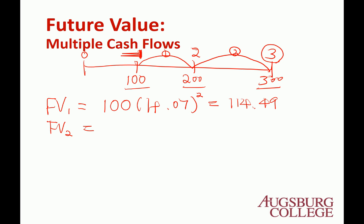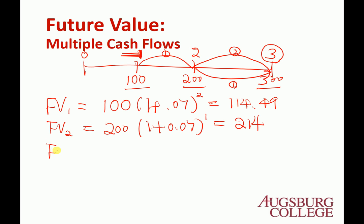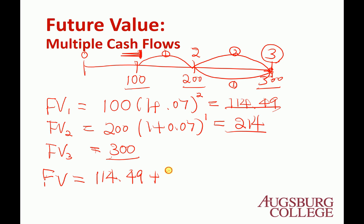For the second account, future value equals $200 × (1 + 7%)¹, which is 1 year of interest, giving $214. The third account is just $300, since there's no time to earn interest. The total future value is the sum: $114.49 + $214 + $300 = $628.49.